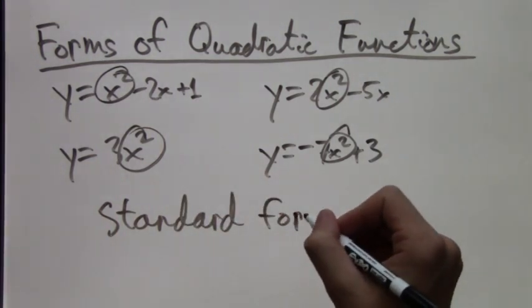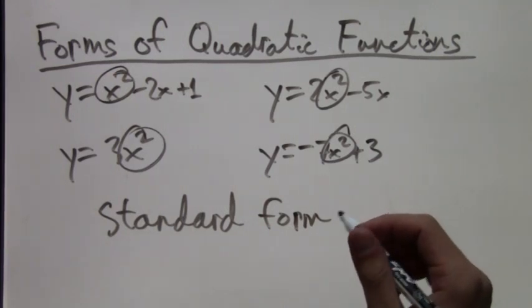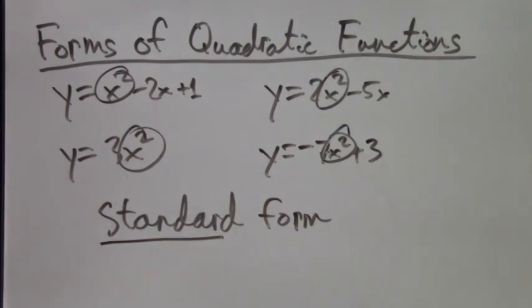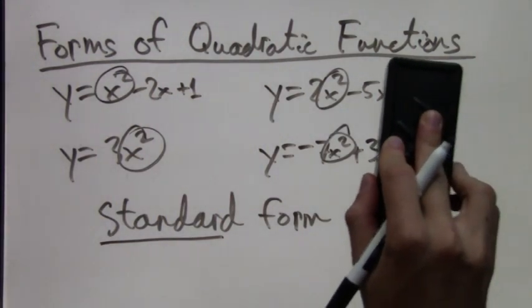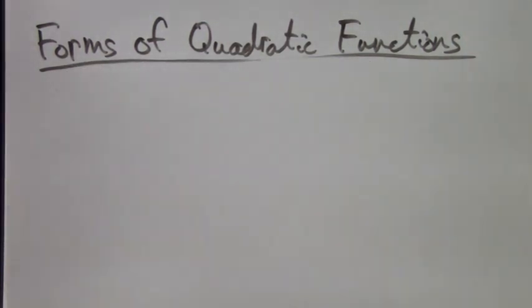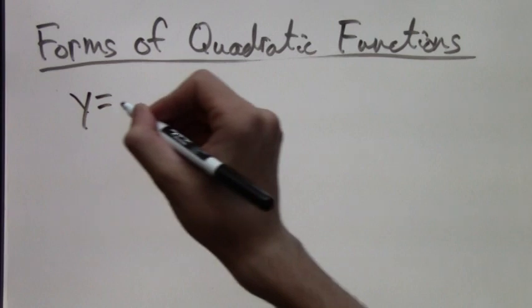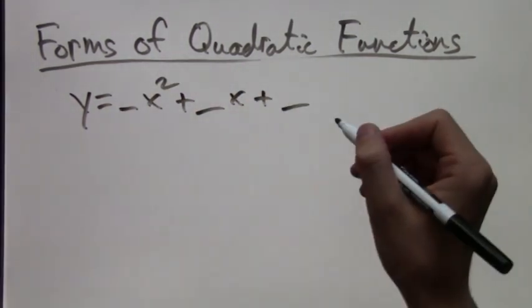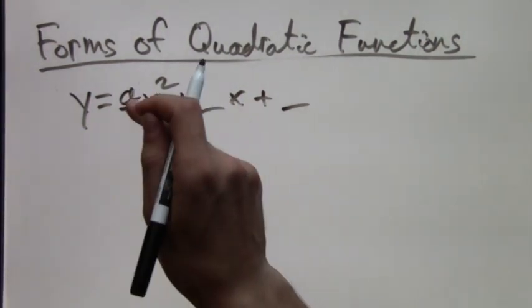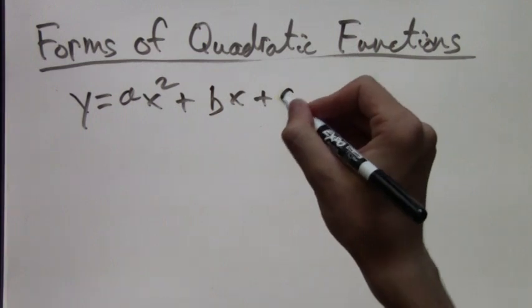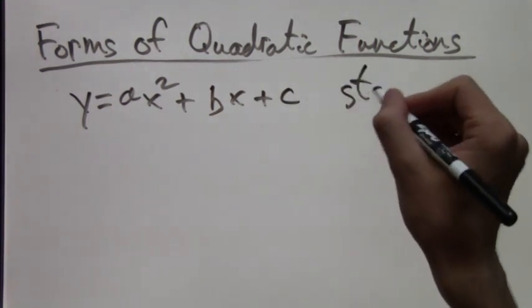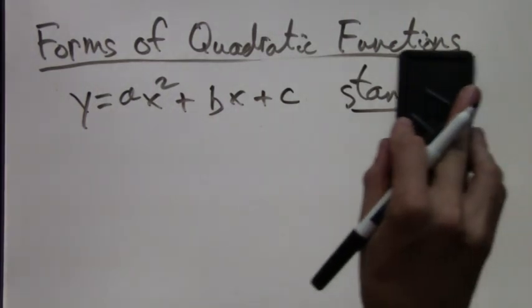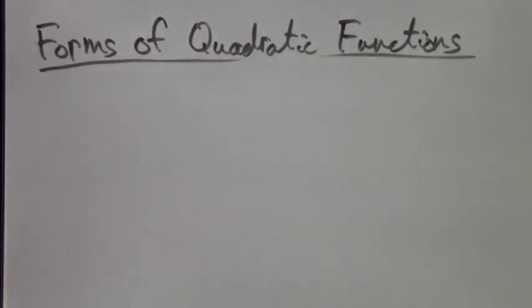This is because we have an x squared, we may or may not have an x term with some sort of constant multiplied by it, and we may or may not have a constant term. In general we have y equals something times x squared plus something times x plus something. Usually you write this as y equals ax squared plus bx plus c. The only rule is that a cannot equal zero because we need to have an x squared term for it to be quadratic. And that is standard form.